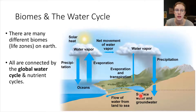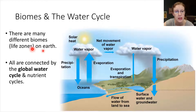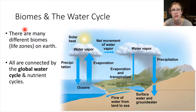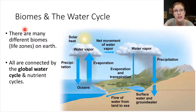Thinking about living things and their environments, there are many different sorts of habitats — different sorts of places where living things can exist on the earth. We like to talk about these in terms of biomes. There are many different biomes on the earth, and they are all interconnected by the global water cycle. Nutrient cycles also exist that connect all these different biomes.